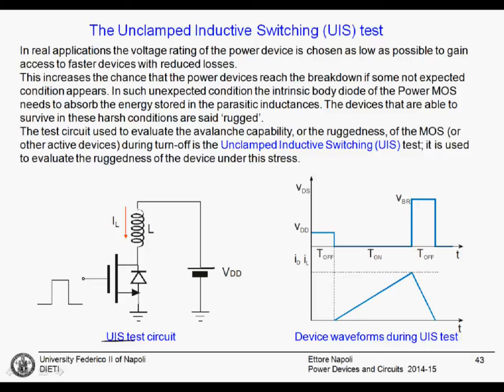How do you test the ruggedness — the strength of the device in breakdown condition? You run this test, which is exactly the inductive load switch test without the diode. Devices that are able to survive in these harsh conditions are called rugged, or you can say they have large avalanche capability.